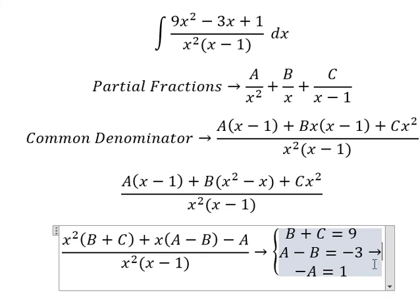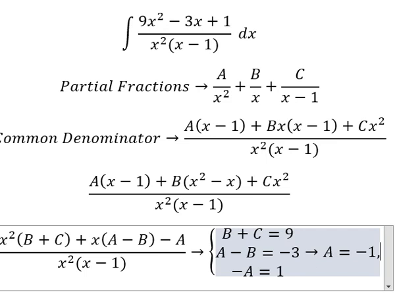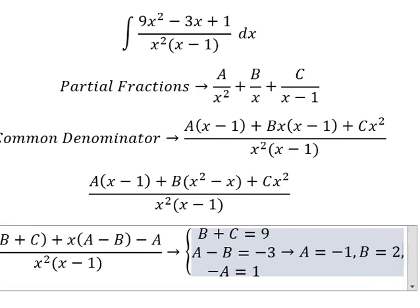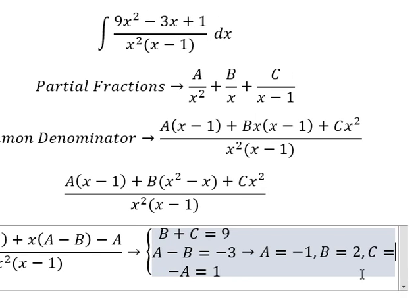So A equals negative number 1. B equals number 2. And C equals number 7.